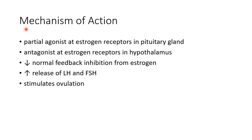Now let us see about the mechanism of action of Clomiphene. Clomiphene is a partial agonist at estrogen receptors in the pituitary gland. It is also an antagonist at estrogen receptors in the hypothalamus. These two actions decrease the normal feedback inhibition from estrogen and lead to increased release of LH and FSH. This surge of LH and FSH stimulates ovulation.